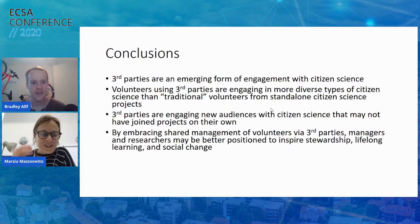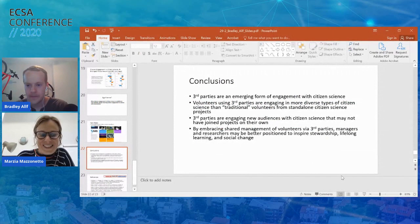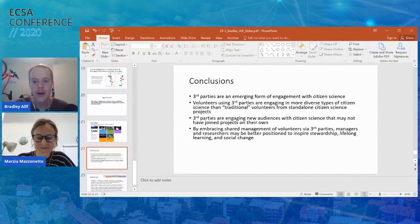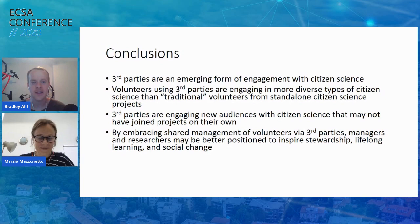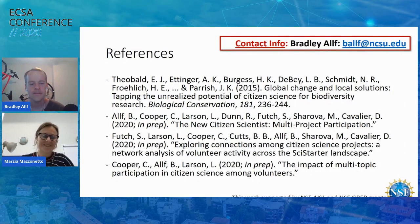In conclusion: third parties are an emerging form of engagement with citizen science. Volunteers using third parties are engaging in more diverse types of citizen science than traditional volunteers. They're engaging new audiences. And by embracing shared management of volunteers through third parties, managers and researchers may be better positioned to inspire stewardship and social change. Thank you. I'm sorry I had to stop you — there are some interesting questions in the chat. Please connect to the Vimeo channel and answer directly there. Thank you, that was really interesting.